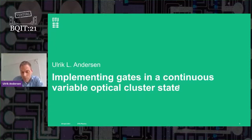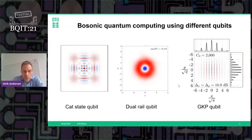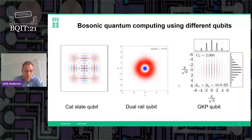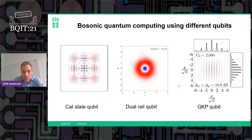We are using an optical approach where qubits are encoded into bosonic modes — bosonic quantum computing. There are many different qubits you can think of in a bosonic mode or harmonic oscillator, but probably the three most studied approaches are: the cat state qubit, where the qubit is encoded as superpositions of coherent states; the dual-rail qubit, where the qubit is encoded as different paths or rails of a single photon; and the Gottesman-Kitaev-Preskill (GKP) qubit, which I will come back to soon.